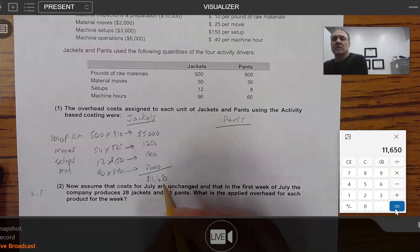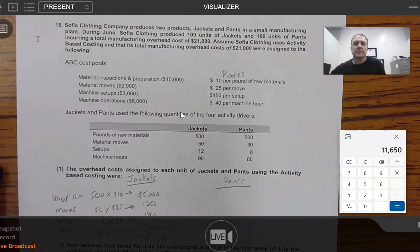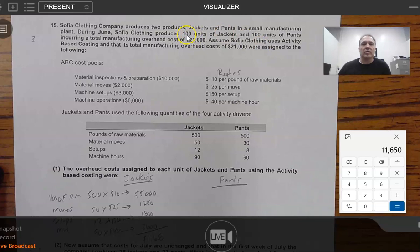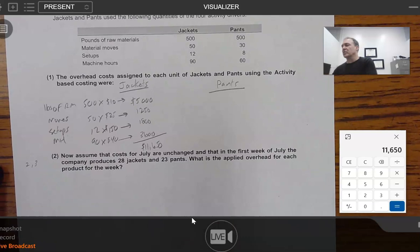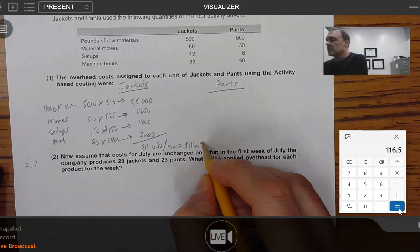But we're not quite done because notice it says they want to know the cost of each unit. So, we have to ask ourselves, okay, how many units are there? Well, it tells us right back up here. Notice we have exactly, we're producing 100 pairs of jackets, I'm sorry, 100 jackets and 100 units of pants. So, now that we have that information, we can actually do this. We just divide by the number of jackets, which gives us $116.50.